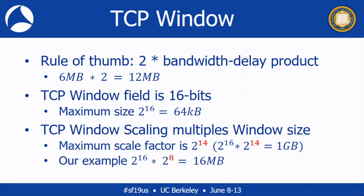The rule of thumb is you want two times the bandwidth-delay product. The bandwidth-delay product is bandwidth multiplied by delay: 1 gigabit times 48 milliseconds equals about 6 megabytes — that's a one-way figure. Since the ACK also takes 48 milliseconds to return, you need to keep sending during that time, so you need about 12 megabytes of TCP window. However, the TCP receive window advertisement field is only 16 bits, which only allows windows up to 64 kilobytes — not enough for 12 megabytes.